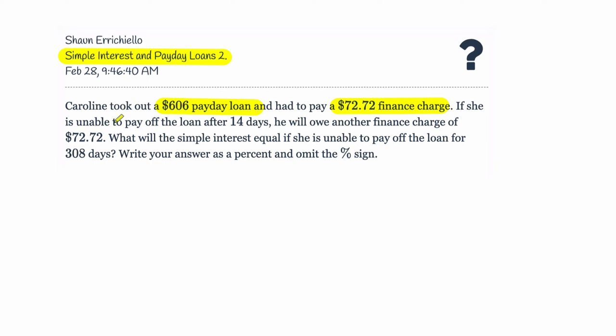Now, if she's unable to pay off the loan in 14 days, with a payday loan, you must pay off the whole thing all at once. So if she's unable to do that, in order to not get a penalty or to have those funds seized from her checking account, she would have to repay that finance charge. So every 14 days, it starts over again.